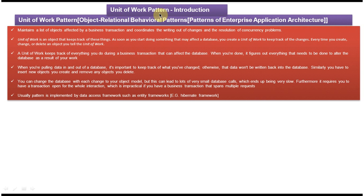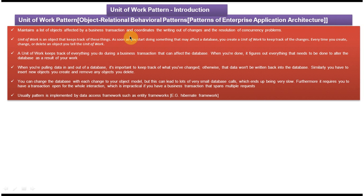Today I will cover the Unit of Work pattern. This pattern belongs to object-relational behavioral patterns, which belongs to Patterns of Enterprise Application Architecture. In this video I will cover the Unit of Work design pattern introduction and how to implement it. I have created a separate video you can log in and watch after you see this video. The explanation is: it maintains a list of objects affected by a business transaction and coordinates the writing out of changes and the resolution of concurrency problems.